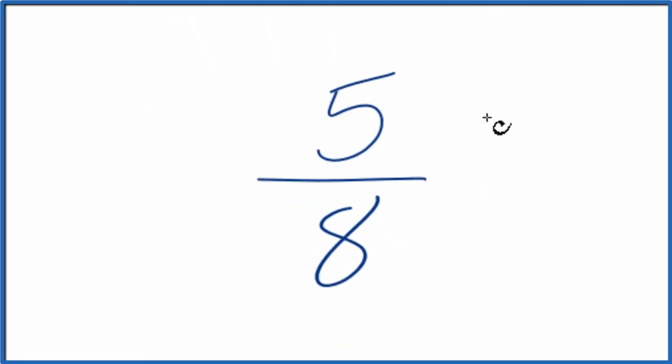When we're simplifying fractions, what we're trying to do is find another fraction that's equal. It's an equivalent fraction. It's just that it's in lowest terms. So for 5 eighths, we want to try to find a common multiple between 5 and 8, and then we can divide the numerator and denominator by that to simplify the fraction.